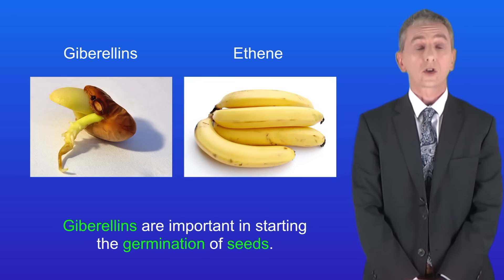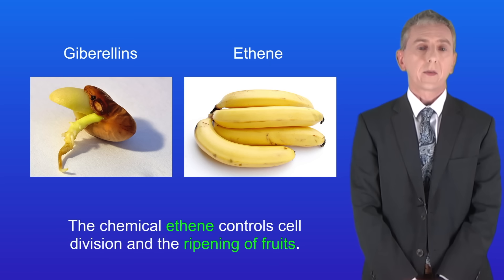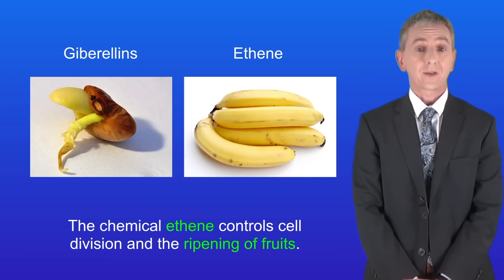Gibberellins are important in starting the germination of seeds, and the chemical ethene controls cell division and the ripening of fruits.